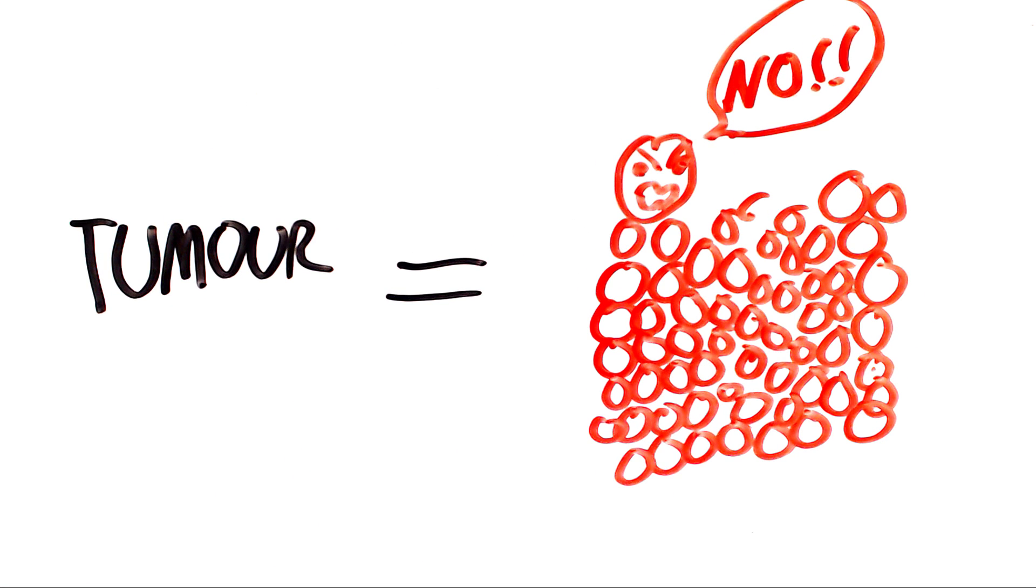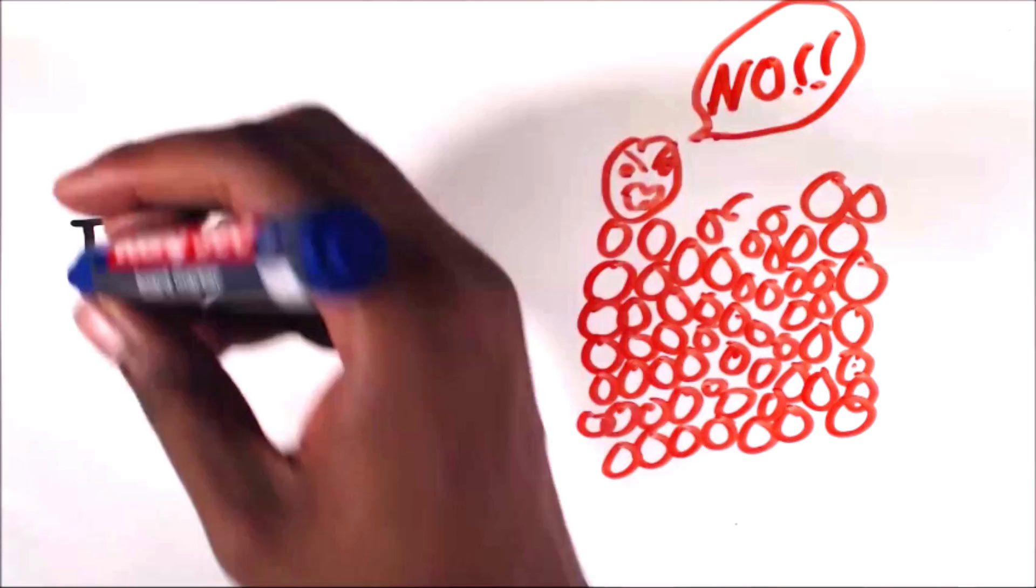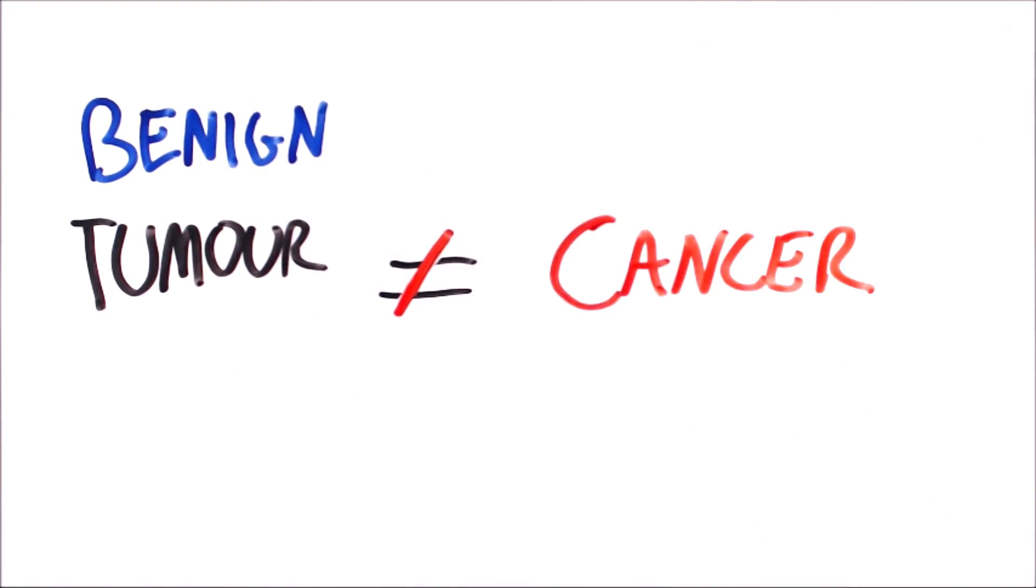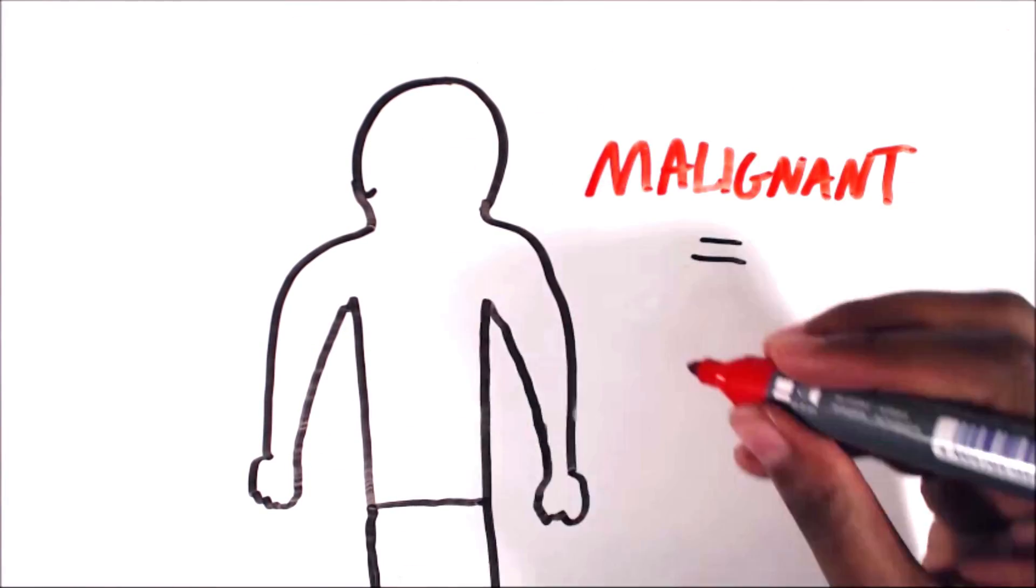There are two types of tumours. If the abnormal cells are restricted to one area then it's called benign. This is not cancer. However if it spreads then this is a malignant tumour, and this is cancer.